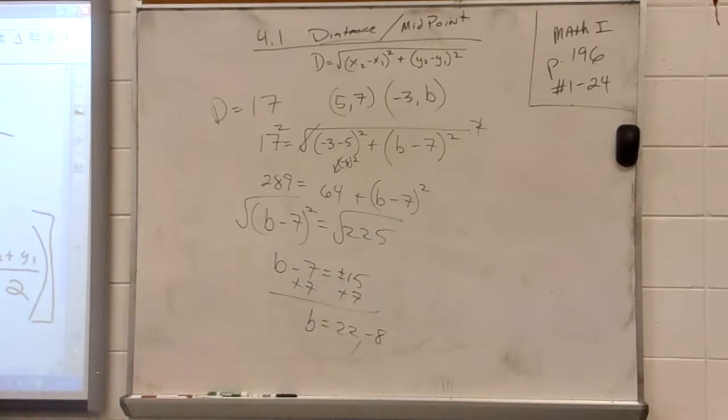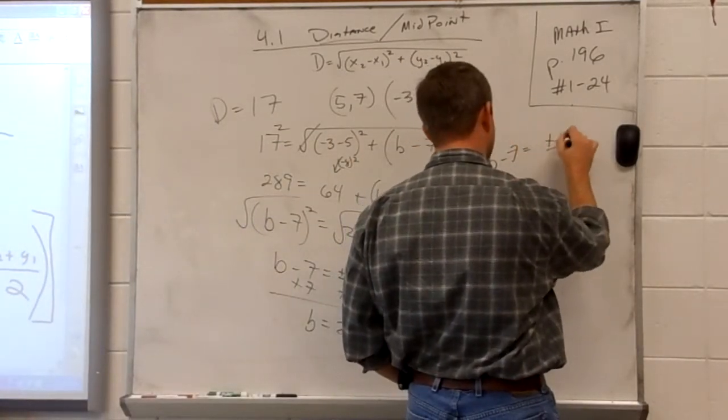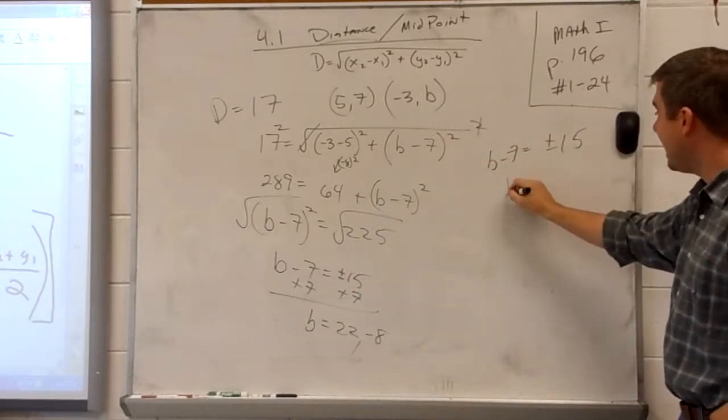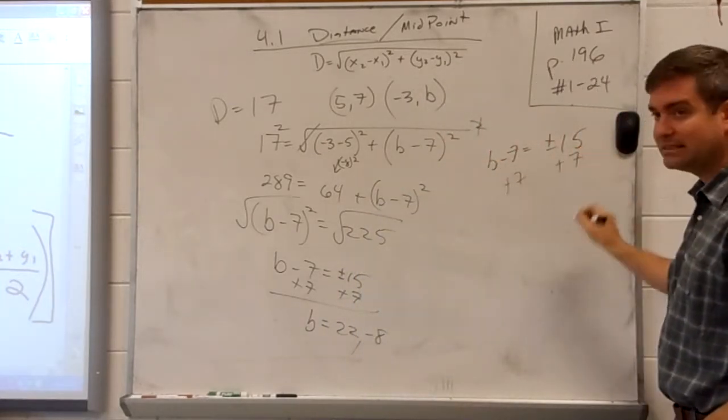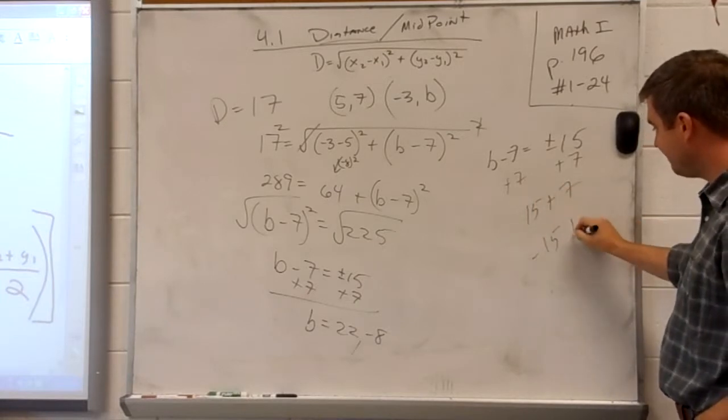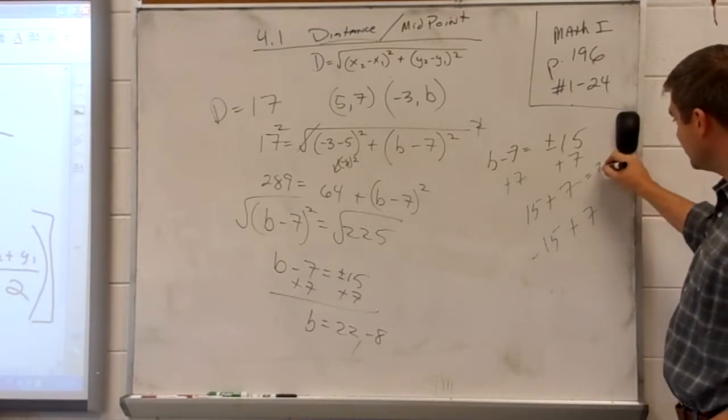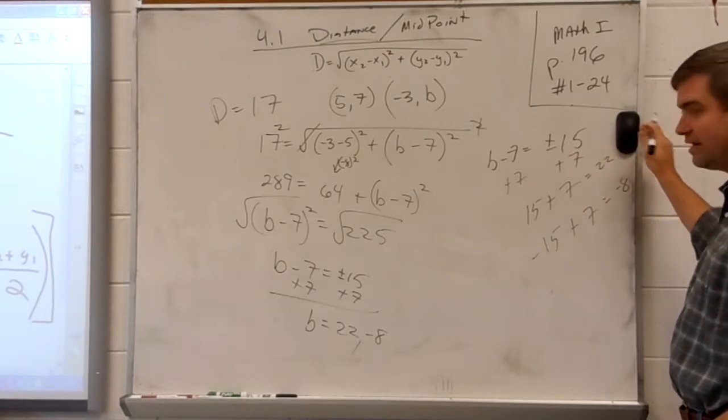All right, what I did was I said b minus 7 is equal to plus or minus 15. You with me today? I added 7 to both sides, so I said 15 plus 7, and I said negative 15 plus 7. I did the positive scenario, and I did the negative scenario. This answer gives me 22, this answer gives me negative 8.